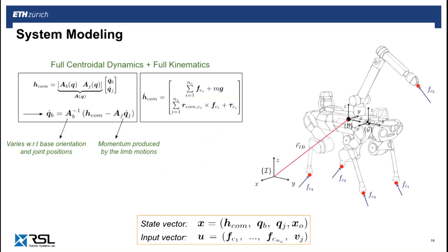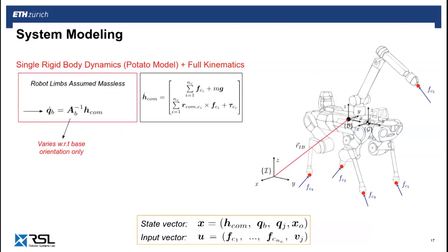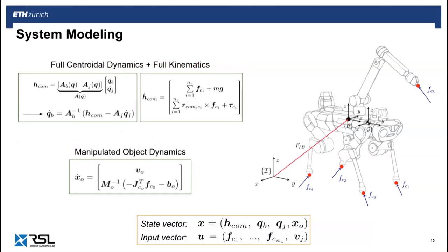We define the equations of motion using the centroidal dynamics formulation, which describes how the centroidal momentum evolves as a function of external forces, and how the derivatives of the generalized coordinates map onto the centroidal momentum. This mapping is given by the centroidal momentum matrix, constructed as a function of the system's kinematics and multibody inertias. What mainly distinguishes our model is its ability to account for the influence of joint positions and velocities on the base motion. In contrast, most template models such as the linear inverted pendulum or the potato model do not encode this coupling, since they assume the robot's limbs to be massless. For whole-body manipulation, having a planner aware of the robot-object dynamic coupling is fundamental, achieved by augmenting the object state and its dynamics to the full system flow map.